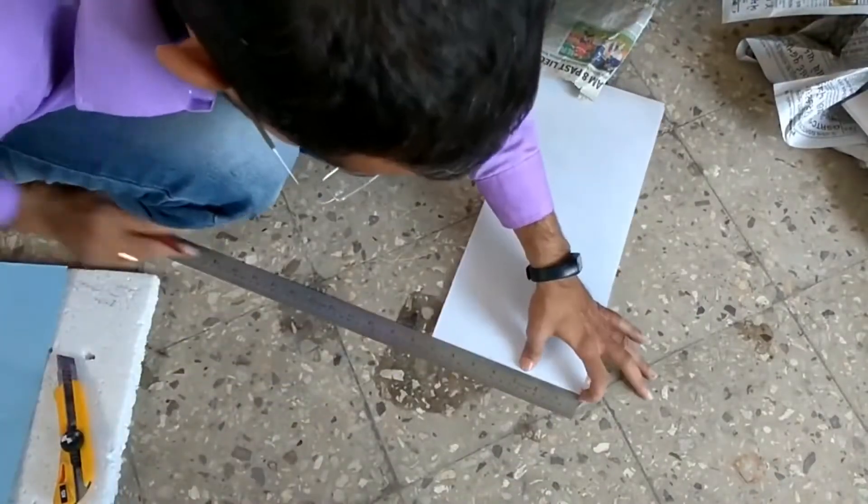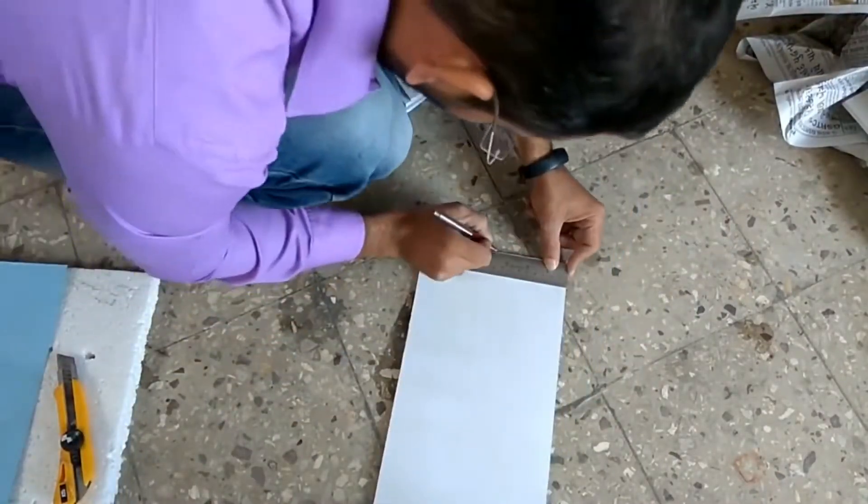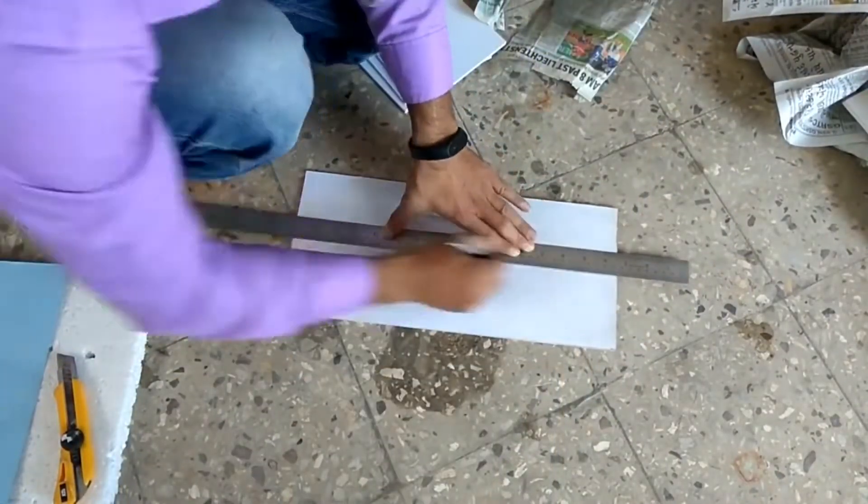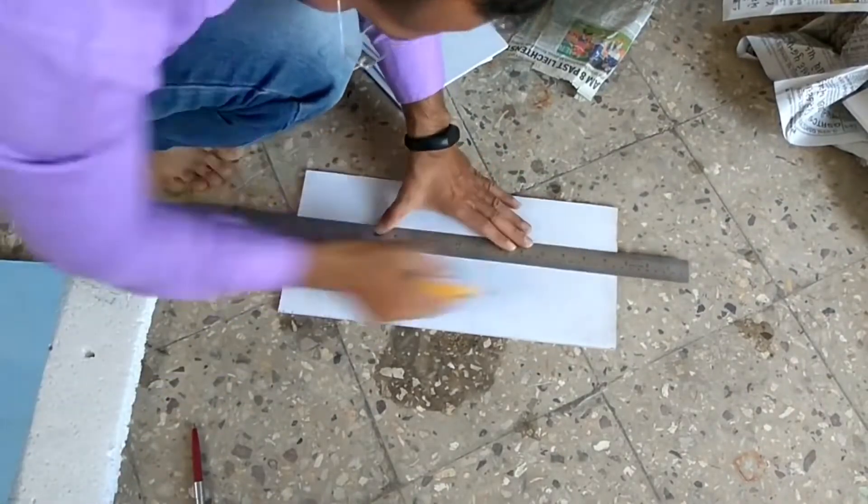Now it's time to make homes, so we are making homes from the PVC sheet. You can also make it from the cardboard sheet.